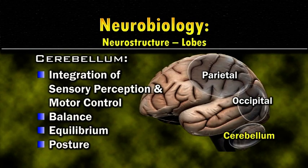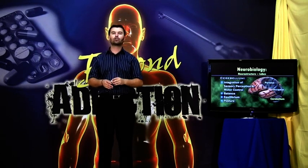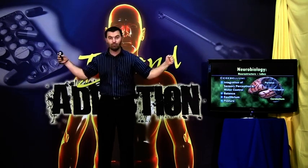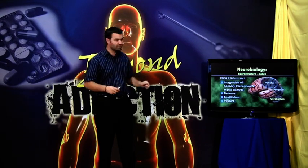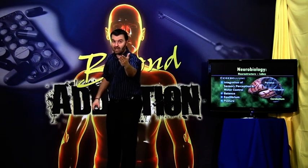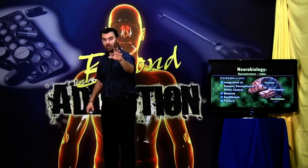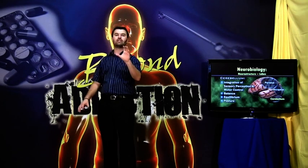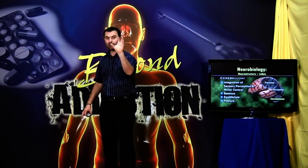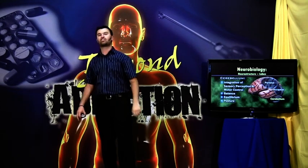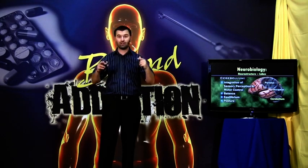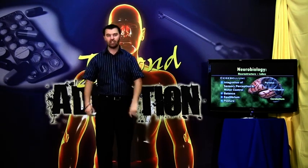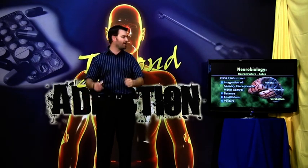Then we have the cerebellum. The cerebellum takes care of all those things you don't even think about. It integrates sensory perception and motor control — the use of your arms and legs. For instance, someone throws a ball at you; the sensory information tells you a ball is coming at a certain speed, and you have to place your hand in front of your face and close your fingers at just the right moment. The cerebellum helps you coordinate all of that without any conscious thought.